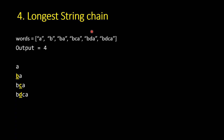The next problem is called longest string chain. A string chain means the words form a chain where you add just one character to a word to get the next word. For example, from 'bca' you can reach 'bdca' by inserting 'd' after 'b'. You are not allowed to change the order of existing characters — only add one character. In this example the longest chain has length 4, starting with 'a'.